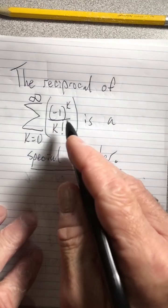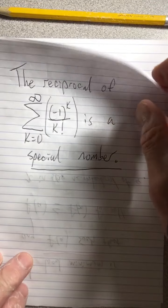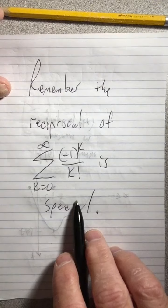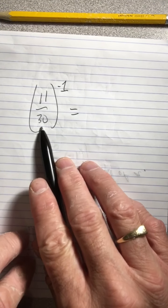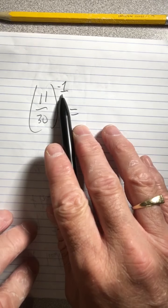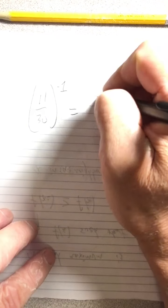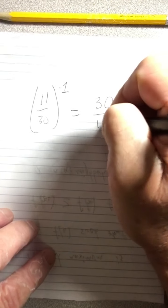So the reciprocal, since that is 11/30... remember the reciprocal of this is special. So let's get the reciprocal. 11/30 to the negative one, this negative one in this context with the number implies reciprocal, so it is 30 over 11.